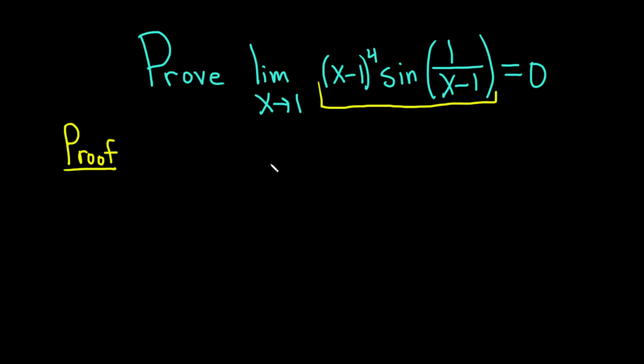I'm going to start by working with the sine function. We're going to write down sine of 1 over x minus 1. If you just plug in 1 here, it won't work because you'll get 0 times something that's undefined because you'll have 1 over 0, so it doesn't make sense.